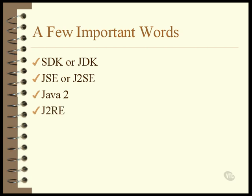The RE stands for Runtime Edition. The Runtime Edition is the collection of files that you need to be able to run Java programs. This collection does not include the compiler or anything else you'll need to write programs — it only contains what you need to run programs. The complete J2RE is included inside the J2SE, so you don't need to download them separately.